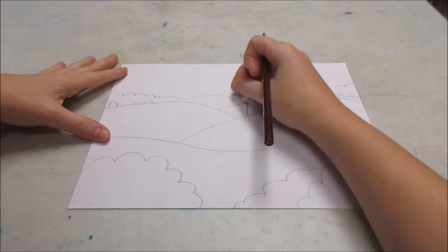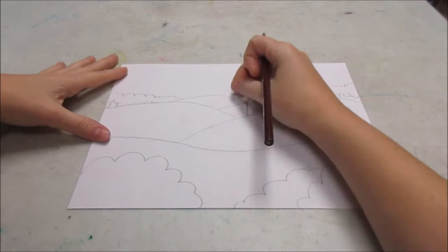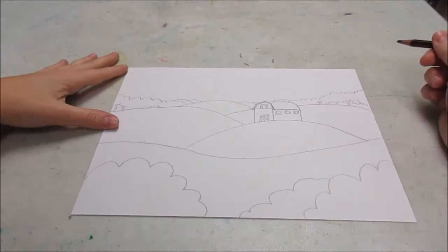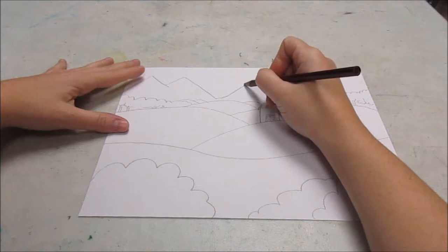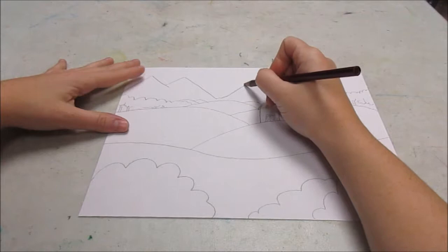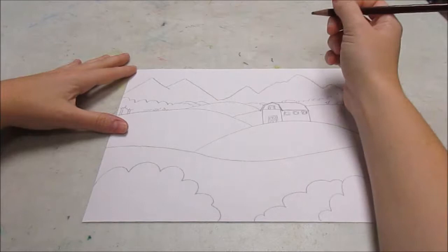So things that are up close are going to look big to us. Things that are far away are going to get smaller and smaller and smaller. So if I had any hills way back here, they'd be very small. They're getting smaller as they go further away into the background. And so let's say furthest away, we've got mountains. Now mountains are huge. So they look big on our picture, but that's just because they are so large.